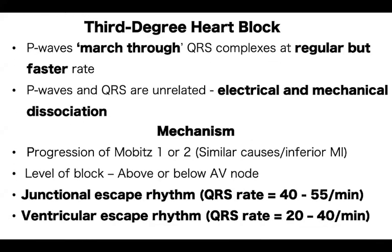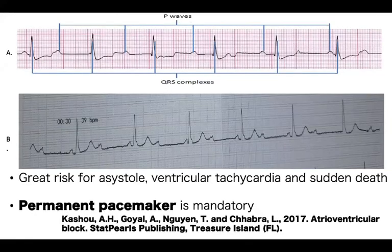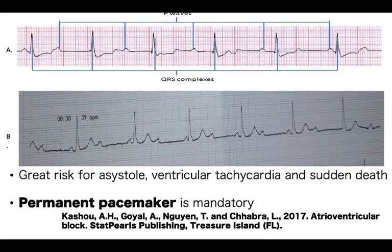Third-degree block is where there is complete electrical and mechanical dissociation. You will see P waves occurring at regular intervals and QRS complexes occurring at regular intervals, but with complete dissociation between them. Patients with Mobitz Type 2 as well as third-degree or complete AV block are at risk of asystole, ventricular tachycardia, and sudden death. Therefore these patients should be transferred to a cardiologist.